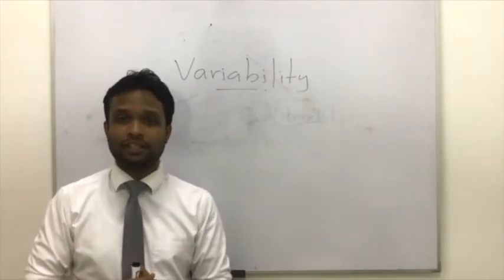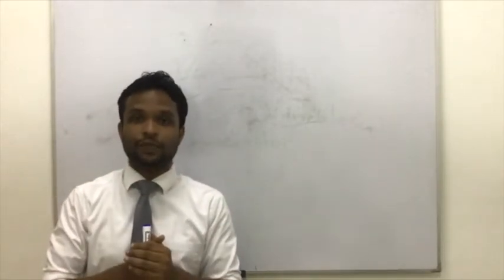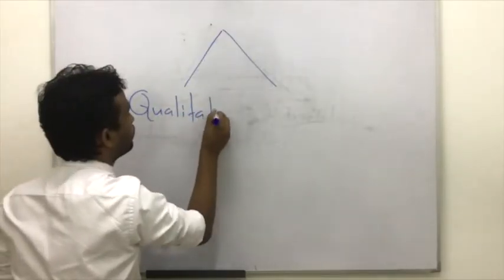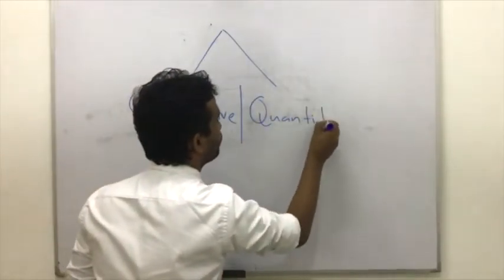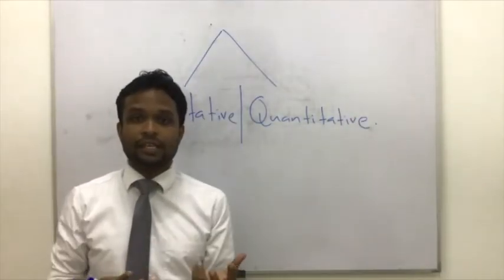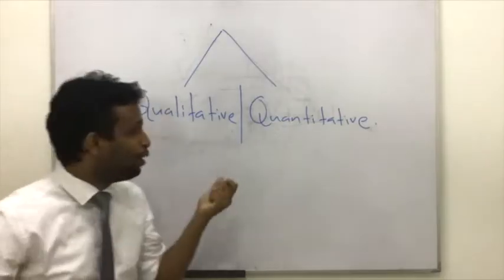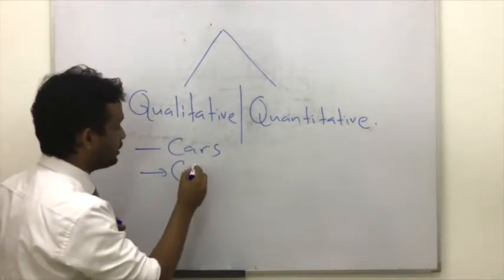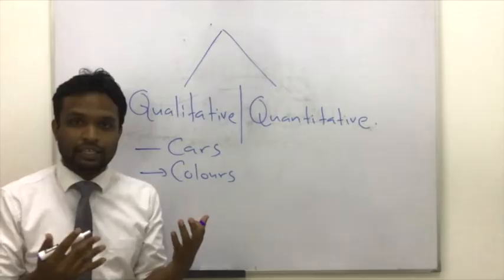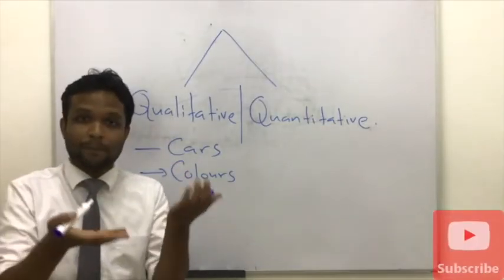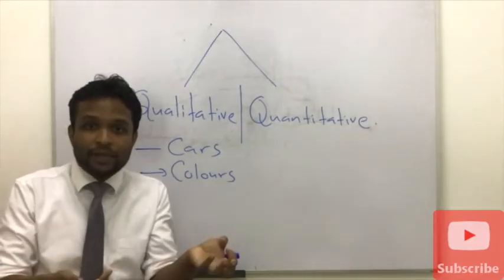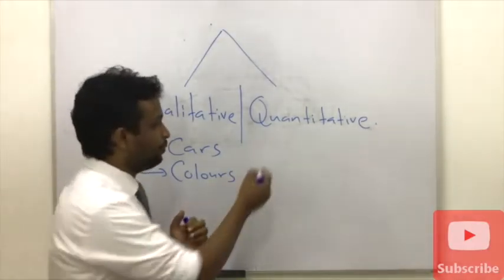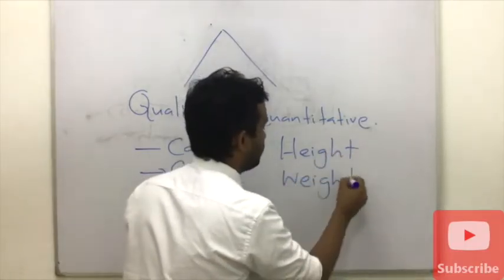So, how do you categorize variables? The major method of categorizing variables is qualitative and quantitative. If the variability exists quality-wise, we call that variable a qualitative variable — for example, class or colors, anything that changes from one observation to another based on quality. If the variability exists in quantity, we call that a quantitative variable — for example, height, weight, or temperature.